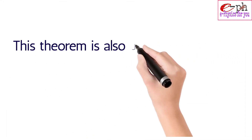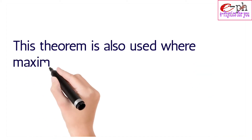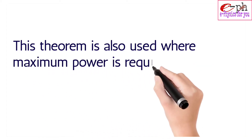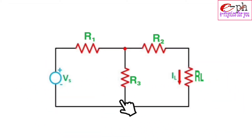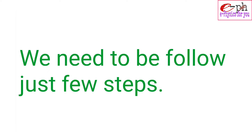This theorem is also used where maximum power is required from the source. Simplifying a circuit using Thevenin's theorem is as easy as eating a chocolate — you just need to follow a few steps.